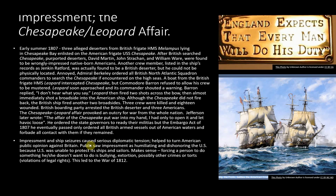Impressment and ship seizures caused serious diplomatic tension and helped turn American public opinion against Britain. The public saw impressment as humiliating and dishonoring the U.S. because the U.S. was unable to protect its ships and sailors. If you're forcing someone to do something he or she doesn't want to do, it's bullying on an interpersonal level, and on the national level it's extortion. That really annoys people when their nation is being messed with by another nation. So this led to the War of 1812.